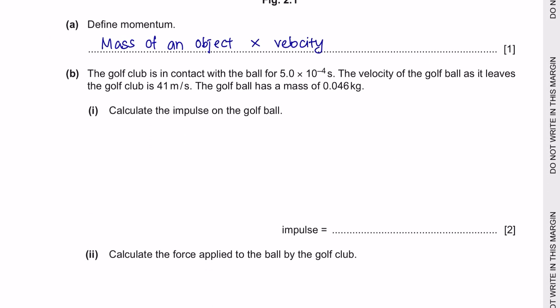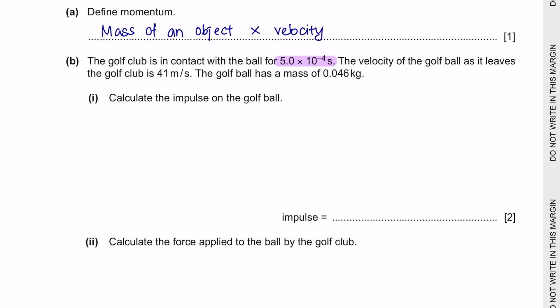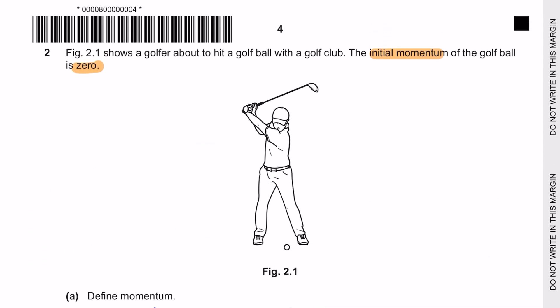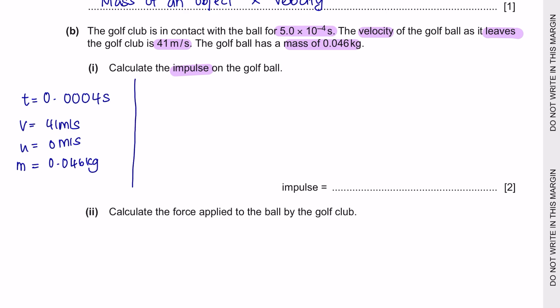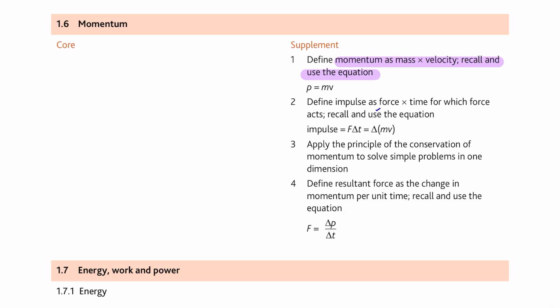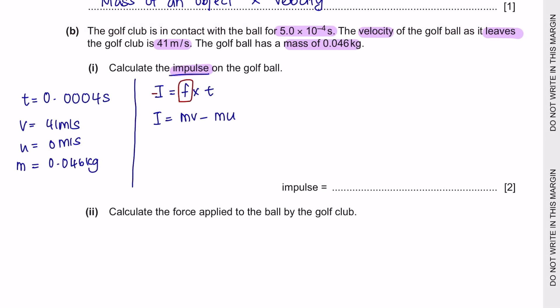Next question B. The golf club is in contact with the ball for 5.0 times 10 to the power of negative 4 seconds. The velocity of the golf ball as it leaves the golf club is 41 meters per second. The golf ball has a mass of 0.046 kilograms. And we are asked to calculate the impulse of the golf ball. Remember that initially we had an extra information whereby the initial momentum is 0. So initial momentum means the mass times its initial velocity giving you 0. So to get 0 means we know that the initial velocity was 0. Now that we have identified all the information given in the question, we can determine which formula to use. Impulse can be calculated as force times time or it is also known as the change of momentum. Since we do not have the value of f here, we can't use the first formula. We are given with mass, final velocity and also initial velocity. So we can use this formula instead, and the impulse is 1.9.